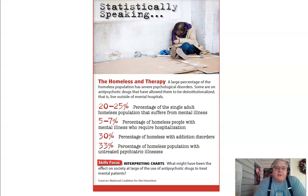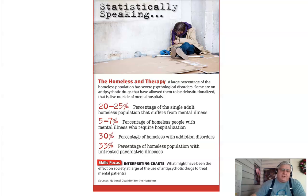Regarding the homeless and therapy: a large percentage of the homeless population has a severe psychological disorder. Antipsychotic drugs have allowed some to be deinstitutionalized. Twenty to twenty-five percent of the single adult homeless population suffers from a mental illness; 5 to 7% of homeless people with mental illness require hospitalization; 30% have addiction disorders; and 33% of the homeless population have untreated psychiatric illnesses.